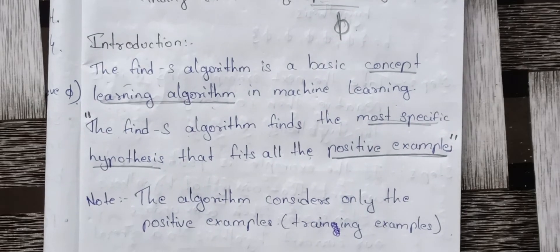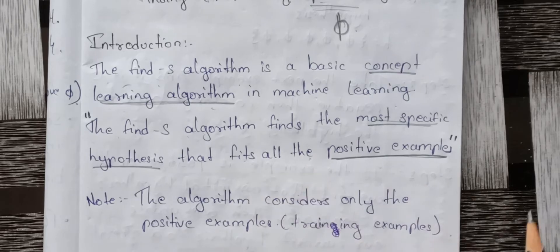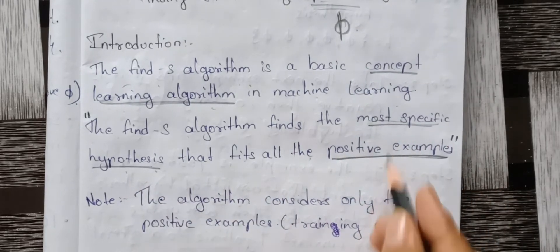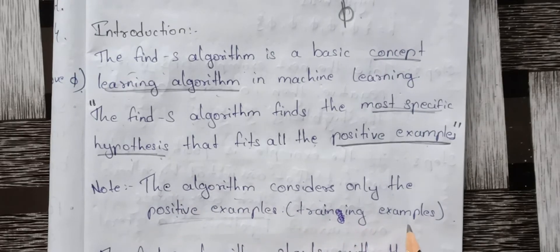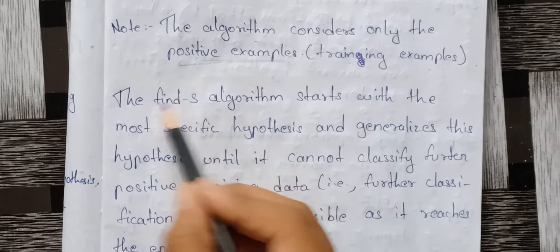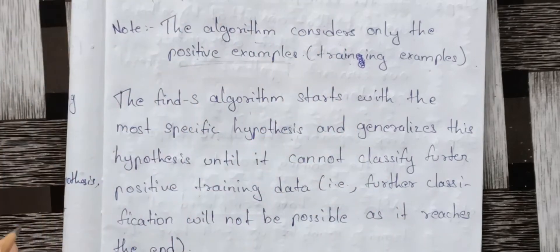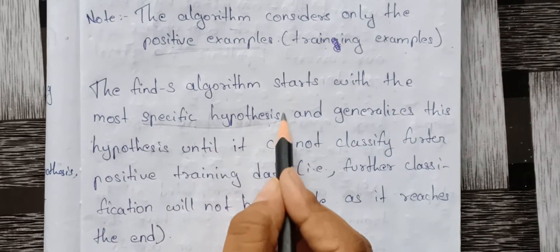Now understand this: we consider positive examples and all the hypotheses that match the given training examples. The Find-S algorithm starts with the most specific hypothesis, then we consider and generalize this specific hypothesis further.